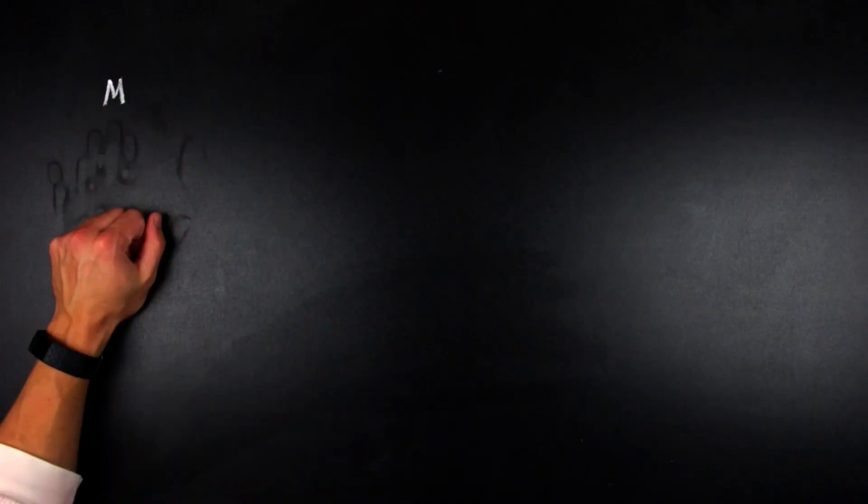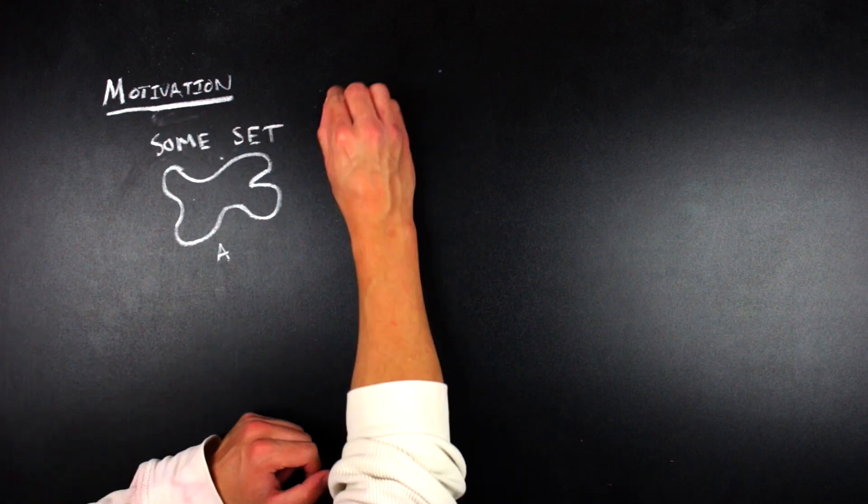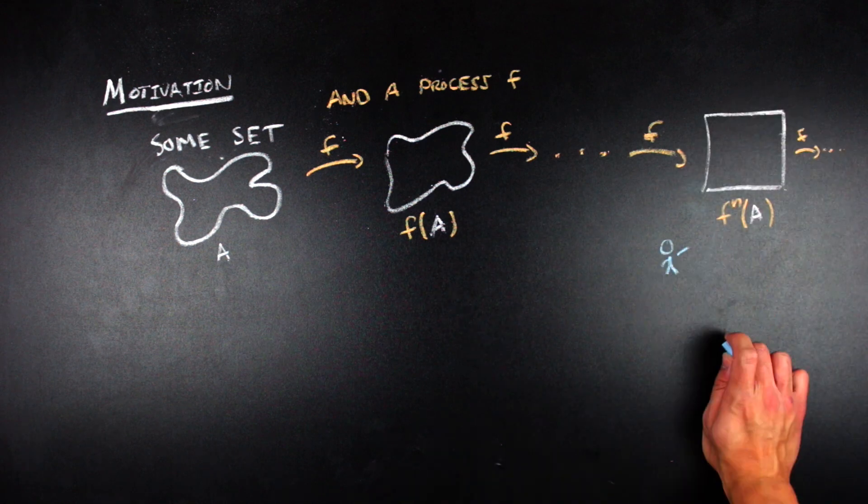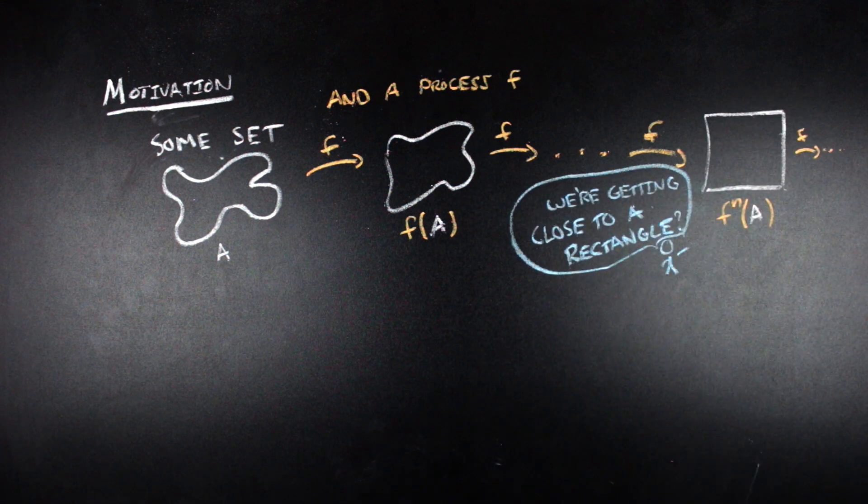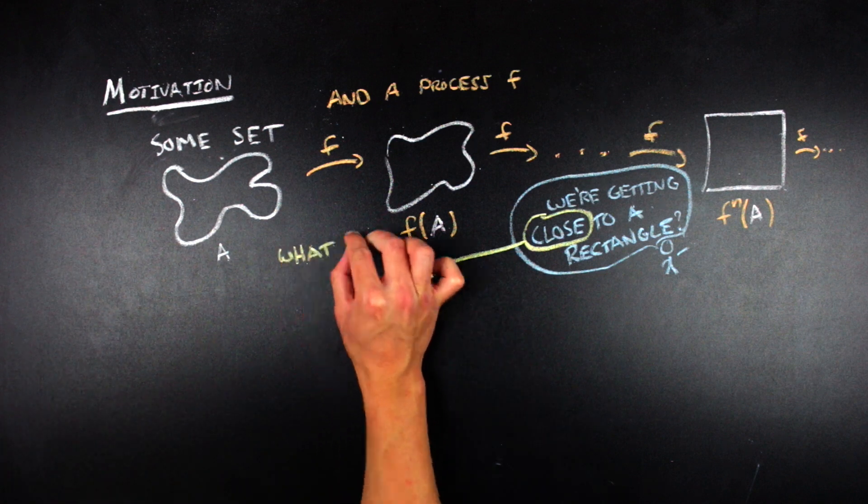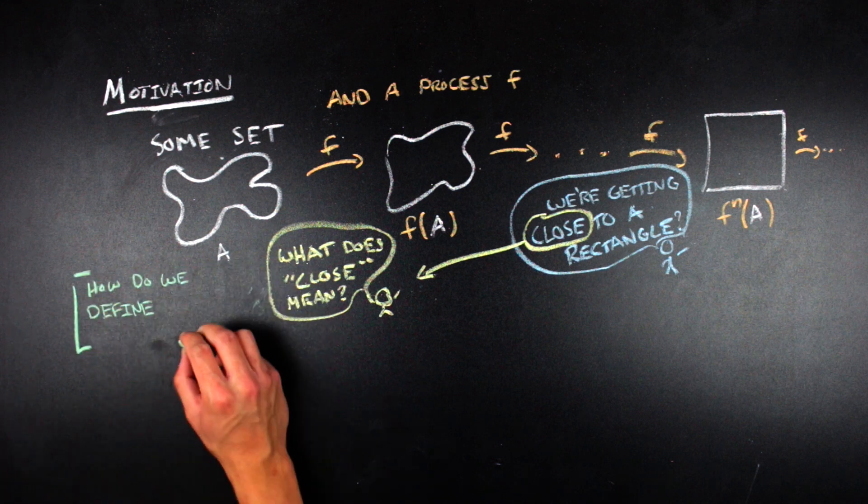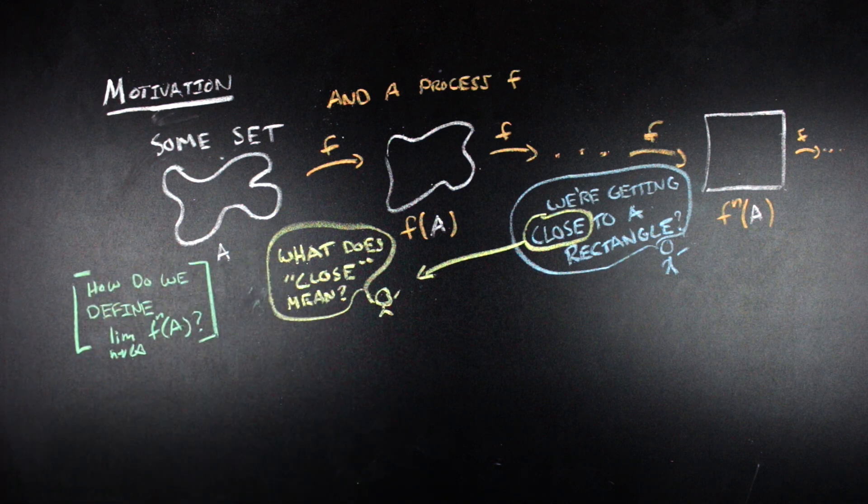So let's say you have some process on a set that you're interested in. And as you iterate that process on your set, you notice that your set gets closer and closer to some object that you're familiar with. The problem with saying close to is that it's not really clear what close to means when you're talking about sets. And so it's a non-trivial question to ask, what does close to mean? This is actually a problem that comes up all over the place, from computer science to bioinformatics, and other places like fractal geometry.